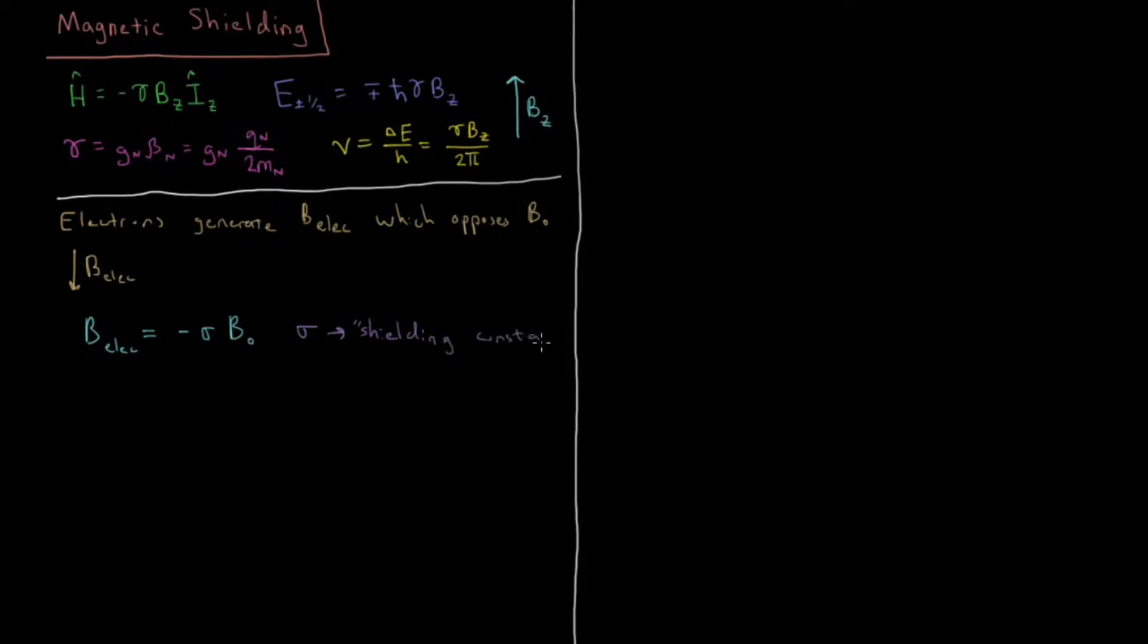What's effectively happening here is you have a magnetic field of a given strength and that magnetic field is opposed by the electronic magnetic field and decreased. So our nucleus is shielded from the full strength of this magnetic field by a small amount which is this shielding constant here.